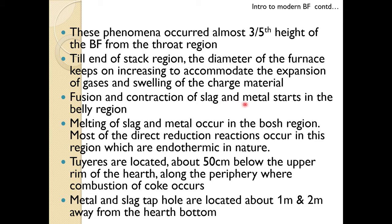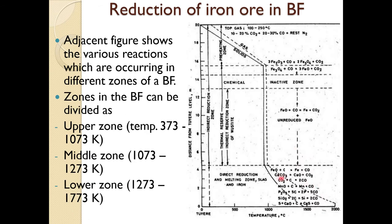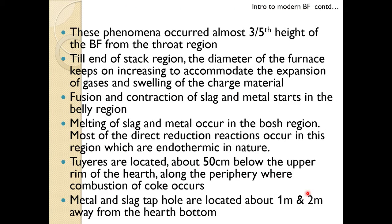Fusion and contraction of slag and metal start in the weld region, and melting of slag and metal occur in the bosh region. Most of the direct reduction reactions occur in this region, and all of them are endothermic.